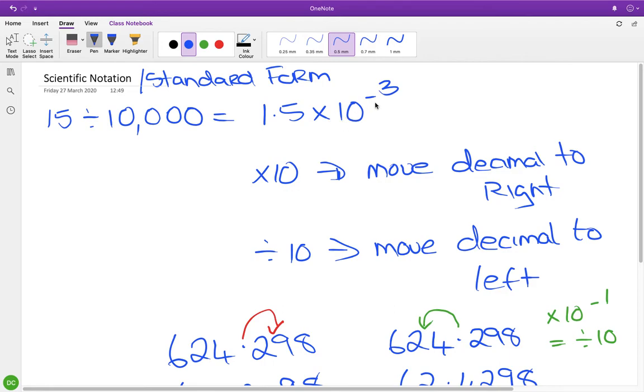So your calculator is showing you 1.5 × 10^-3. We're going to take 1.5 and divide by 10 three times, since 10^-3 is the same as dividing by 10 three times. When dividing, we move the decimal point to the left.